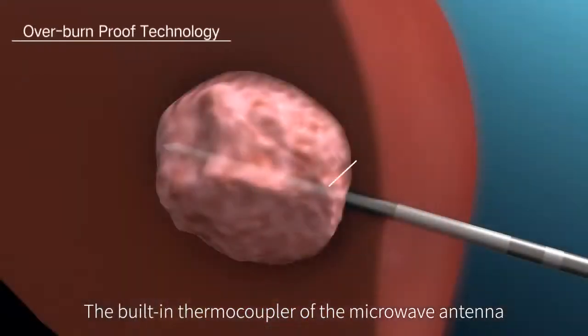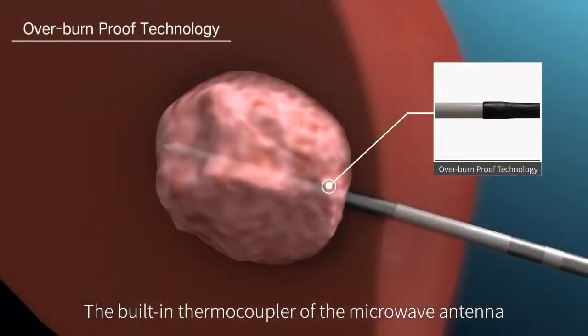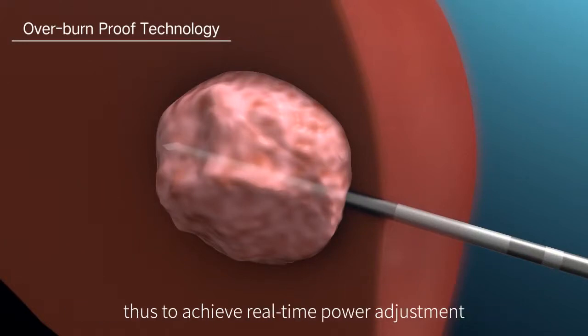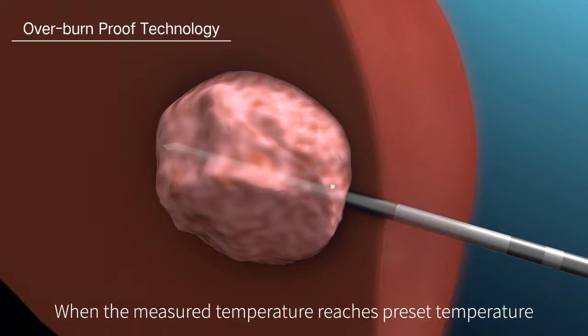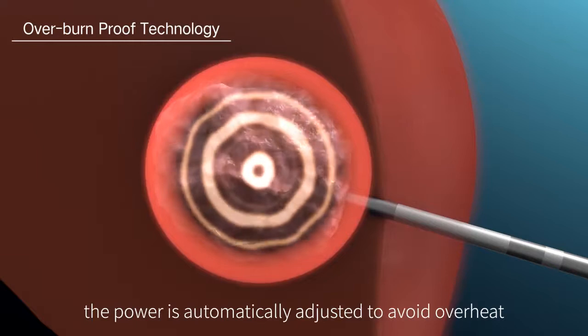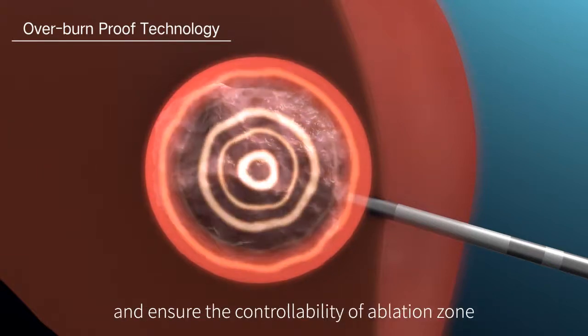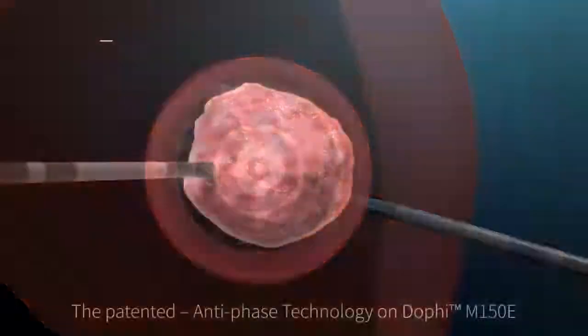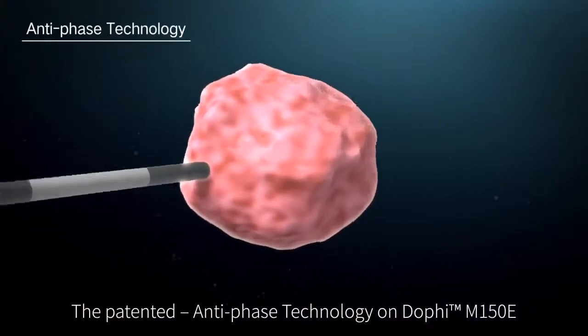The built-in thermocoupler of the microwave antenna monitors the temperature at the edge of the radiation area to achieve real-time power adjustment. When the measured temperature reaches preset temperature, the power is automatically adjusted to avoid overheat and ensure the controllability of ablation zone.